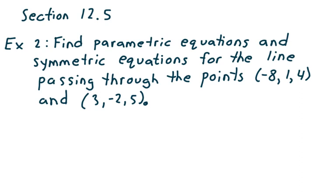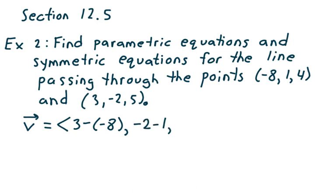I'm going to suppose that negative 8, 1, 4 is my initial point and 3, negative 2, 5 is my terminal point. So V is equal to: the X component will be 3 minus negative 8, the Y component will be negative 2 minus 1, and the Z component will be 5 minus 4. When I simplify this, I get 11, negative 3, 1. So V is a vector that runs parallel to the line we want.